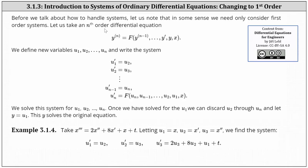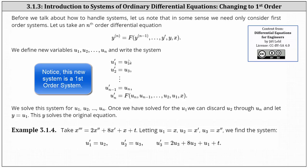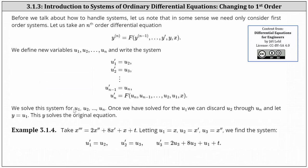Let us take an nth-order differential equation as defined below. If we define new variables u1, u2, all the way through un, and write the system: u1 prime equals u2, u2 prime equals u3, all the way down to u sub n minus one prime equals u sub n, and then finally u sub n prime equals big F of u sub n, u sub n minus one, all the way down to u2, u1, and x, we can solve the system for u1, u2, all the way through un.